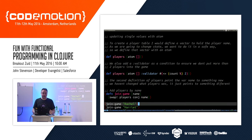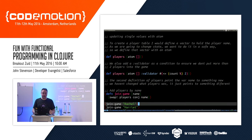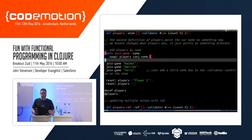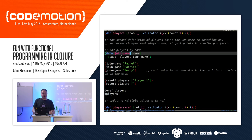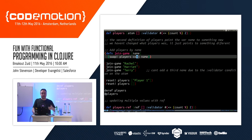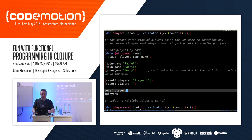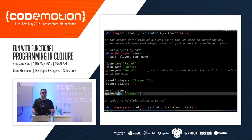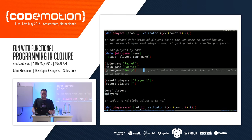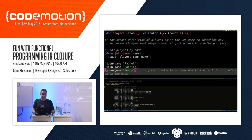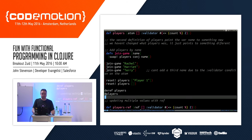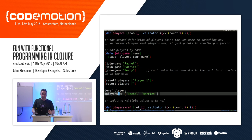I'm putting a validator on the atom that says I don't want more than two players added to my game. I define a function called `join-game` that takes names and swaps the values currently in `players` with the name passed in as an argument. When we do `(join-game "Rachel")`, Rachel joins the game. We can see she's now part of the `players` data structure. Then Harriet joins and we've got two players. If we try to add Terry, it throws an invalid reference state error because of the two-player condition.